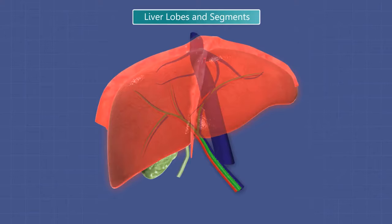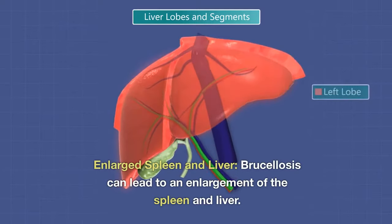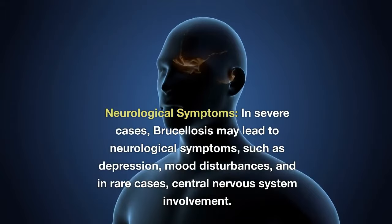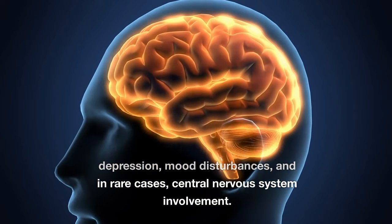Brucellosis can lead to an enlargement of the spleen and liver. In severe cases, brucellosis may lead to neurological symptoms such as depression, mood disturbances, and in rare cases, central nervous system involvement.